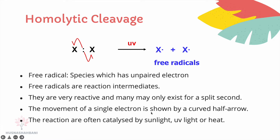The movement of a single electron is shown by a curved half-headed arrow. A half-headed arrow indicates the movement of one electron only. A fully-headed arrow means two electrons move. These reactions are often catalyzed by sunlight, UV light, or heat.